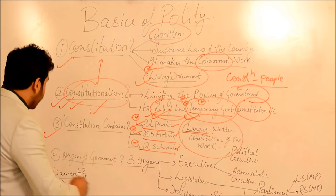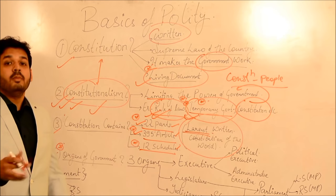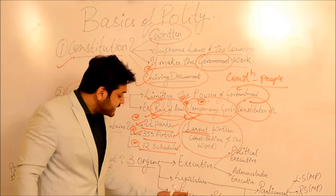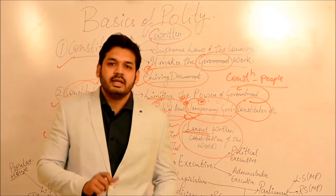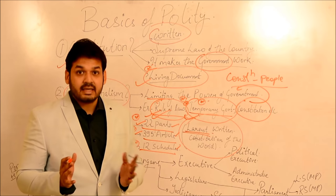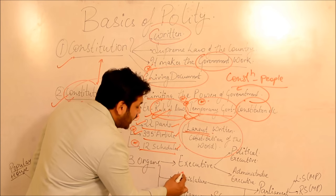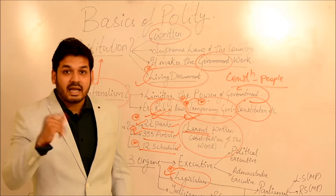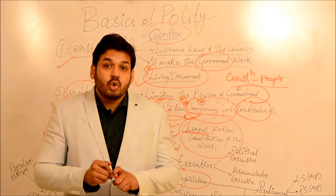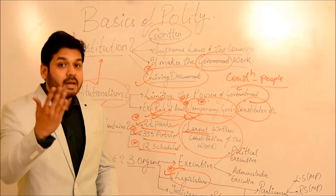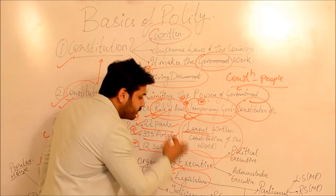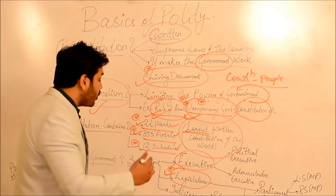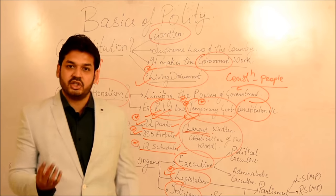Next basic topic: organs of government. There are total 3 organs of government. First is Executive, second is Legislature, and third is Judicial. The difference: those who make the law are known as Legislature. Once the law is made, it needs to be executed - those who implement the law are called Executive. And those who protect the law are known as Judiciary.